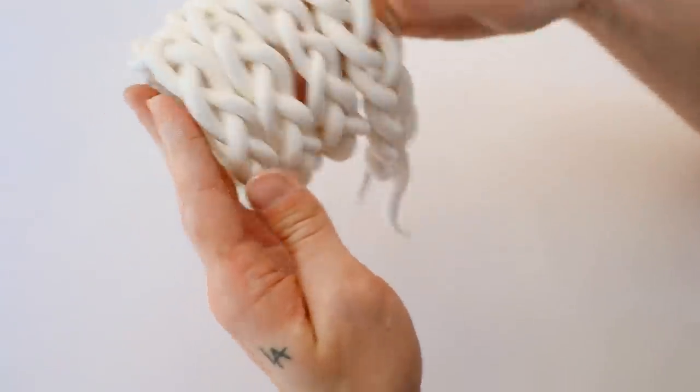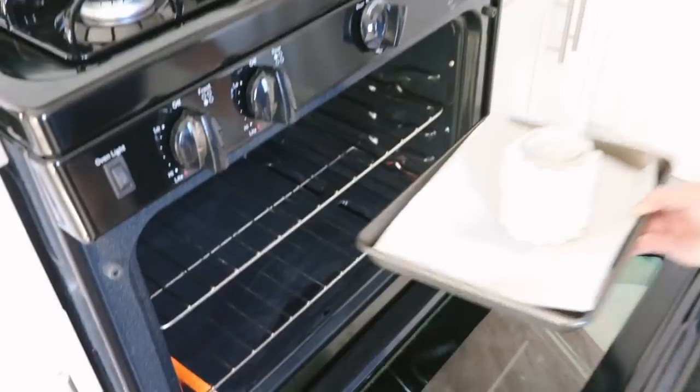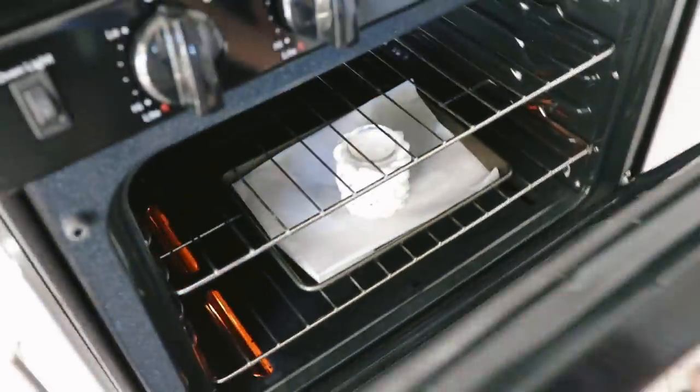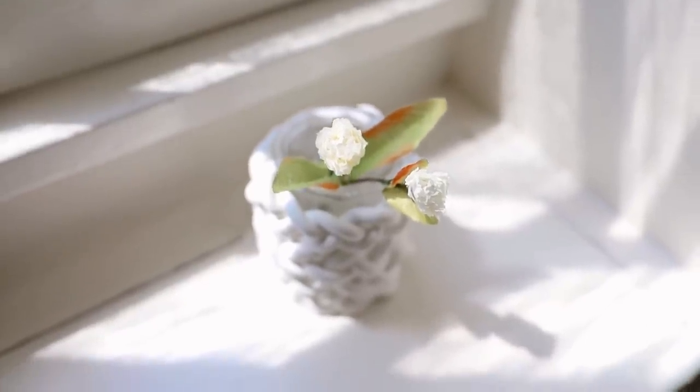This is what the finished vessel looks like and all you need to do is pop it in the oven and bake it per your clay's instructions, and that finishes off your super cute little plant holder or vase, whatever you want this to be.